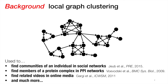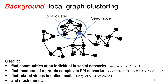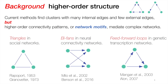This work is about local graph clustering, where the idea is you're given a network or a graph, you're given some seed node, and you want to find a cluster of nodes containing that seed node. This is used in a variety of applications, such as finding communities of an individual in social networks, finding protein complexes, and finding related videos in online media. Current methods find clusters or groups of nodes with many internal edges and few external edges.